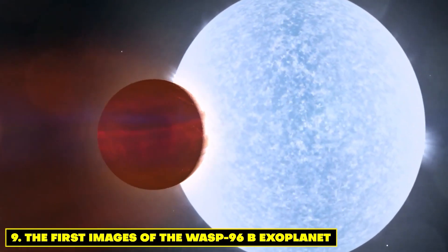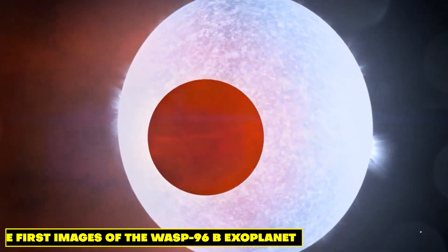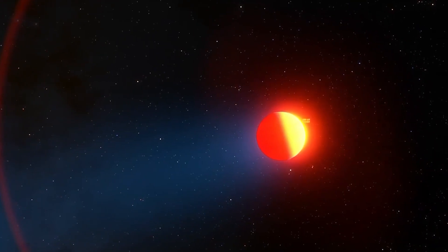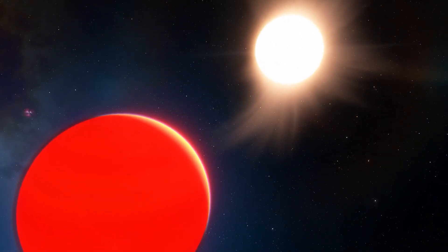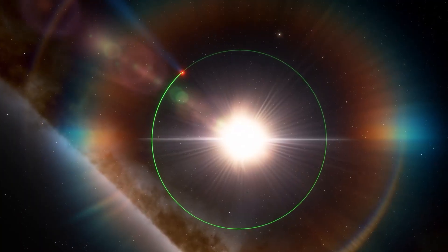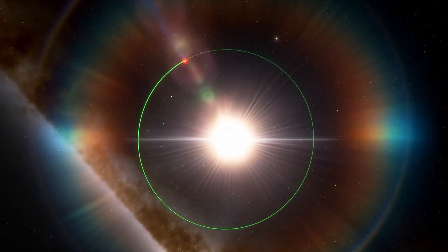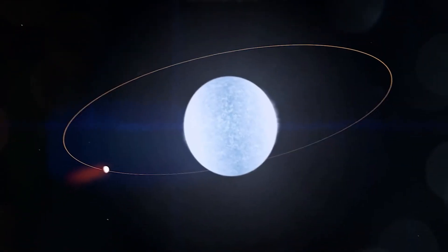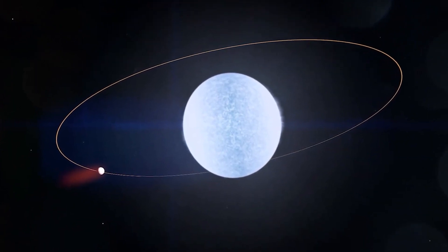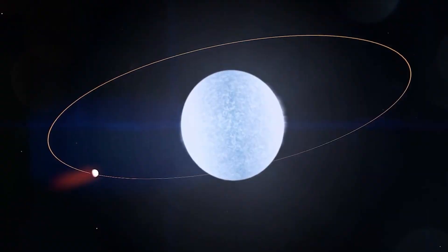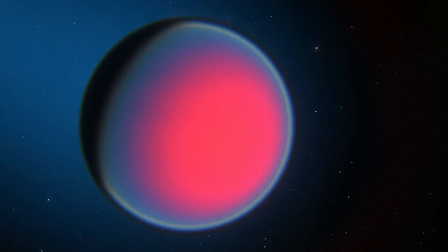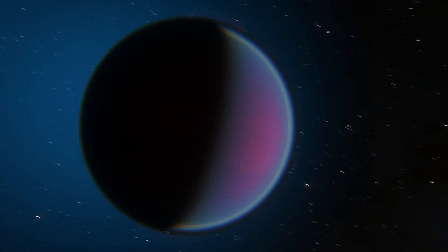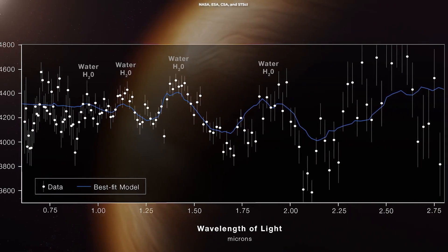Number 9. The First Images of the WASP-96b Exoplanet. Behold, the James Webb Space Telescope has immortalized the exoplanet WASP-96b in its fiery glory, a hot Jupiter located a staggering 1,150 light-years distant from our own pale blue dot. This gas giant, akin to the majestic Jupiter within our own solar system, gracefully traverses the celestial stage, orchestrating periodic dimming of its host star's luminance. The scrutiny of such planetary transits bequeaths scientists with a precious opportunity to decipher the mysteries shrouding this distant world's atmosphere, offering a trove of invaluable data on its composition and properties.